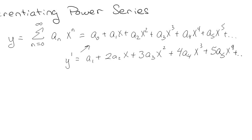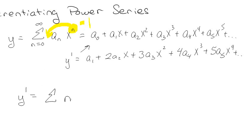Now, assuming that's done, that's well and good, but what if I actually didn't want to have to write it out to differentiate it? What if I just want to differentiate from the summation? It's pretty much the same thing as differentiating normally — I'm going to take the coefficient, put it in front, and subtract 1 off the exponent. So I get the summation of n times a sub n times x to the n minus 1.